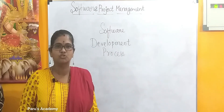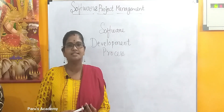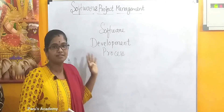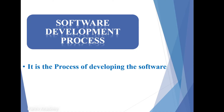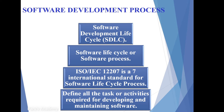Hi students, welcome to Parus Academy. Today in this class we will discuss about software development process. Software development process is the process of developing software. It consists of many steps and processes for developing a new software. The software is developed according to the requirement of the customer. Software development process is also called a software development life cycle, or SDLC.